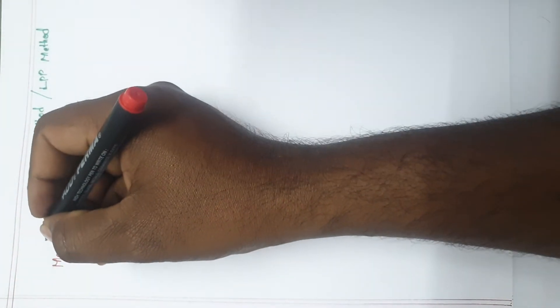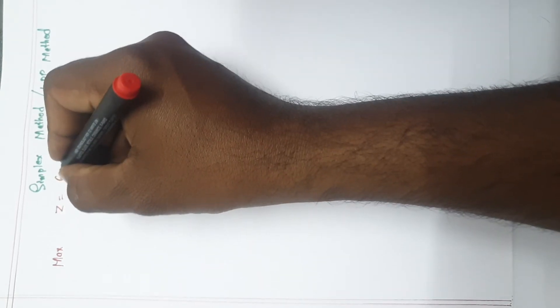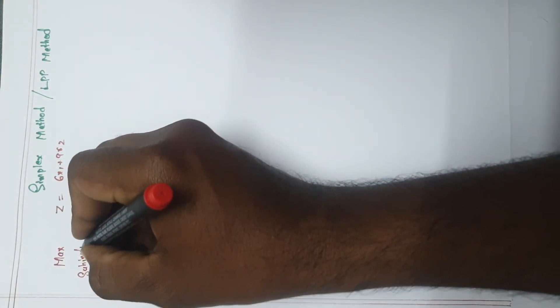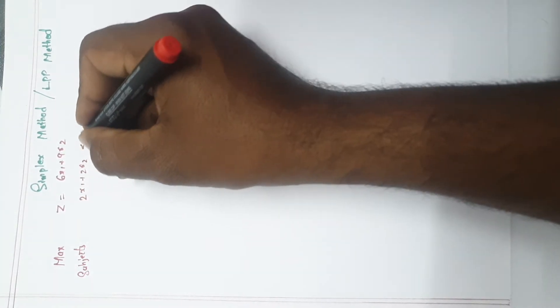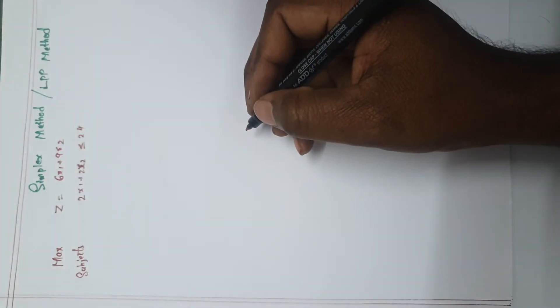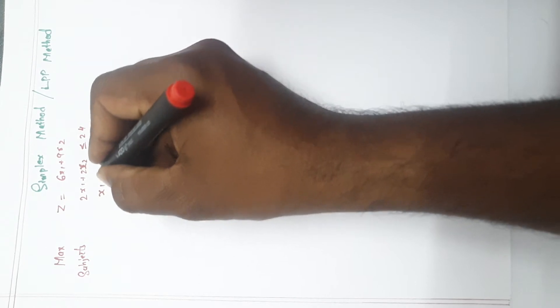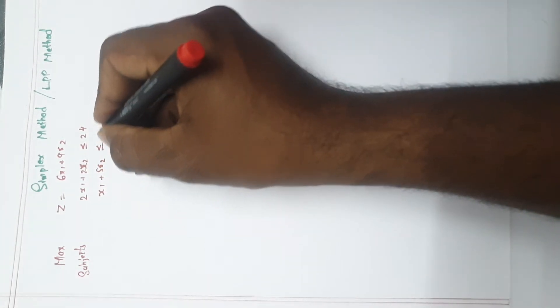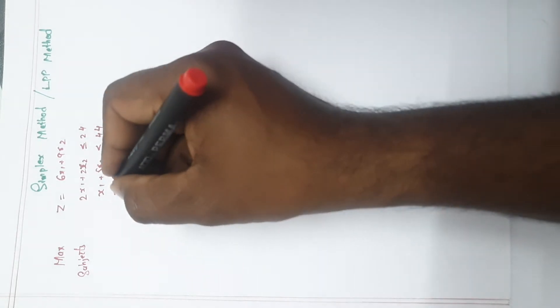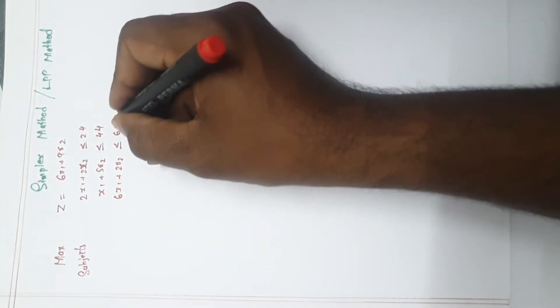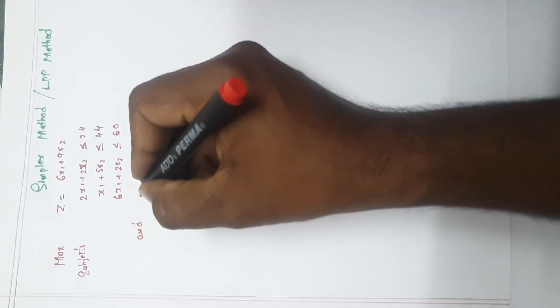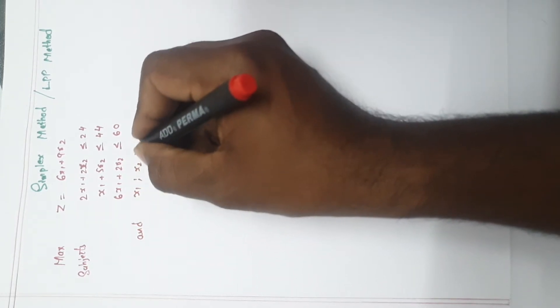A question will be given like this — sometimes maximum will be given, sometimes minimum. Here, max is given: maximize z = 6x1 + 9x2, subjected to: 2x1 + 2x2 ≤ 24, x1 + 5x2 ≤ 44, and 6x1 + 2x2 ≤ 60.